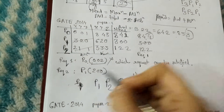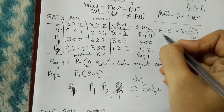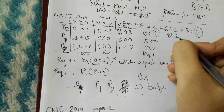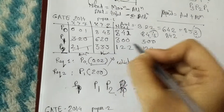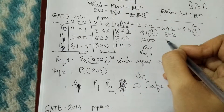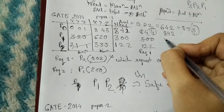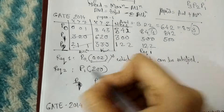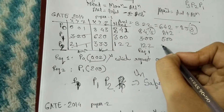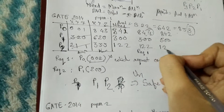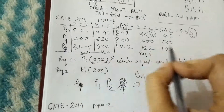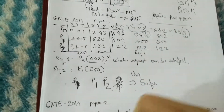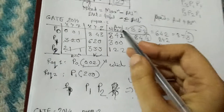Now we will see what happens if P1 makes a request. P0 is unchanged; the request of P1 is increased from 3 to 5, and P2's request remains the same. The available is 3, 2.